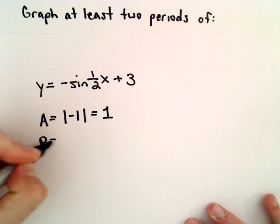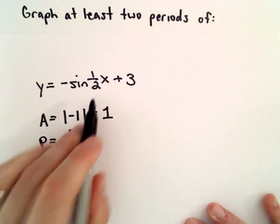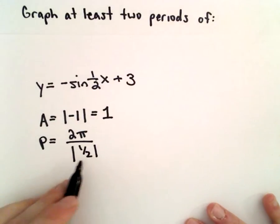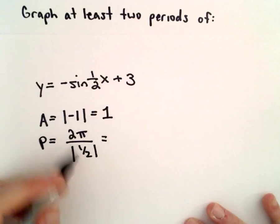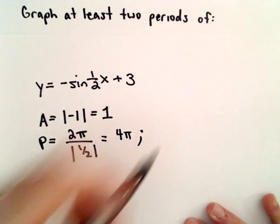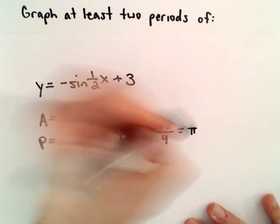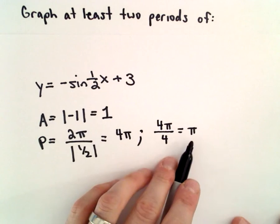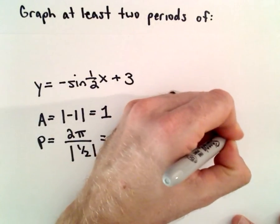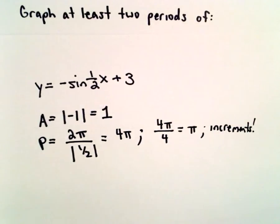The period in this case, we've got 2π divided by the absolute value of b. The b value in this case will be 1 half. So 2π over 1 half will give us 4π. If we take the period and divide it into 4, so 4π over 4 will give us π. These are going to be the increments I'm going to use just to help me mark things along the x-axis.